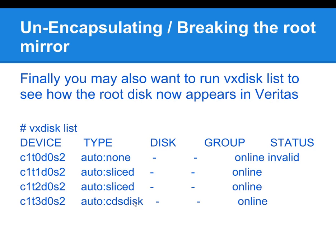Now if we go back and do another VxDiskList, we can see that the RootDG disc group is now gone. The disks are all still visible to Veritas, but at this point you can consider that the Root Mirror has been broken.